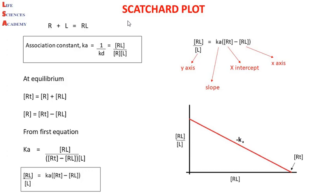Coming to the main point: we know that a receptor binds the ligand to form a receptor-ligand complex, and the equilibrium constant for this equation is known as the association constant, that is Ka. The association constant is just the inverse of the dissociation constant, which is denoted by Kd. So the association constant equals the product concentration — that is the receptor-ligand complex — divided by the reactant concentrations, that is receptor and ligand concentration.